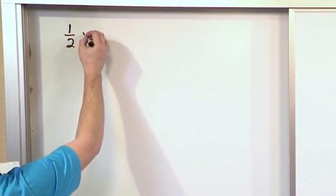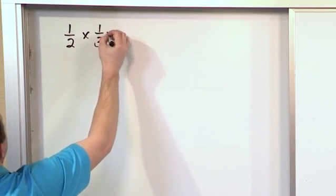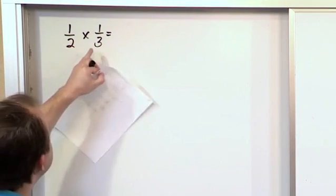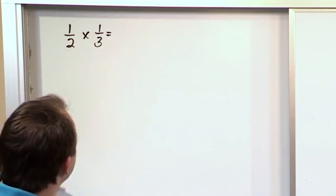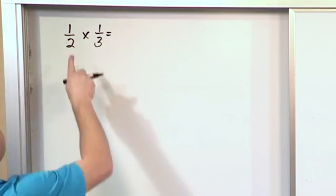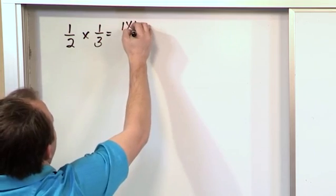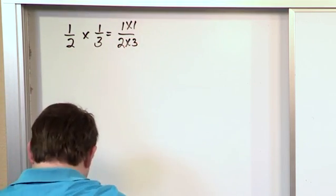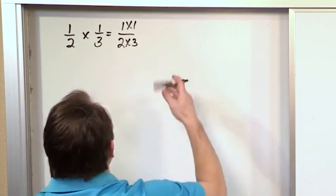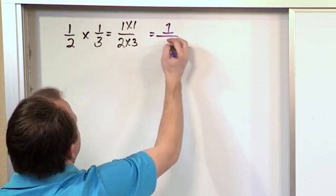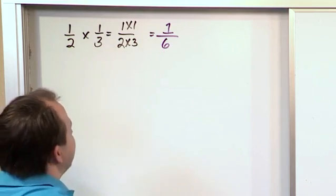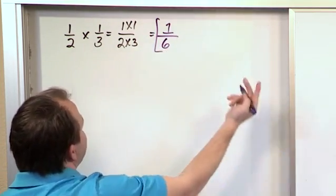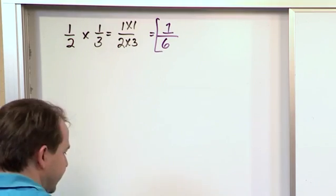So what if you have one half times one third? You do exactly what we said before. You do not need a common denominator in order to multiply fractions together. All you do is you multiply the numerators, one times one, and you multiply the denominators, two times three. So at the end of the day, one times one is one, two times three is six. And you look at this and say, can I simplify this anymore? And I cannot because I cannot divide top and bottom by something to make it any simpler.